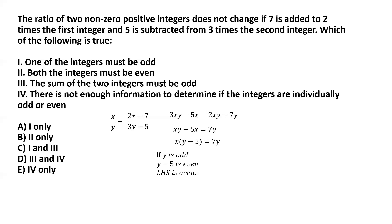What about the right hand side? Assuming y is odd, we have 7 multiplied by y, and the product of two odd numbers results in an odd number. So if y is odd, then 7y must be odd, making the right hand side odd. We have a contradiction, which implies that y cannot be odd. If y cannot be odd, y has to be an even number.